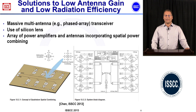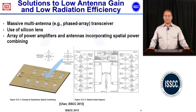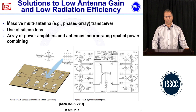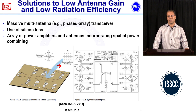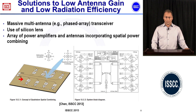As for solutions to low antenna gain and low radiation efficiency, one effective idea implemented well in silicon platforms is the use of massive multi-antenna transmitters and receivers incorporating special power combining. By using many on-chip antenna elements and transmitting signals coherently, high output power can be achieved through free-space power combining, thereby mitigating insufficient on-chip antenna gain and power amplifier output. An example is a four-element IQ transceiver presented at ISSCC 2013.